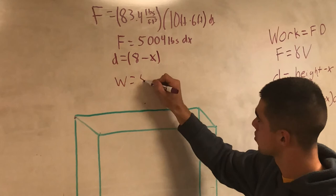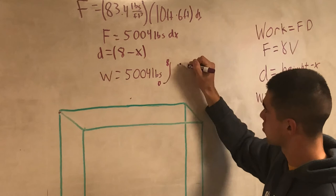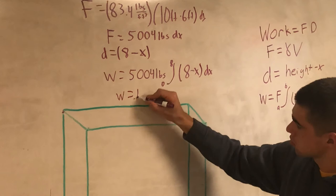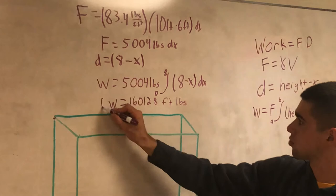Now you put that into your formula. The force, which is 5,004 pounds, multiplied by the integral from A to B, and since the tank is full, it's 0 to 8, multiplied by 8 minus x dx. Then you plug that formula into math 9 on your calculator. You find out that work to empty the tank equals 16,128 feet per pound.